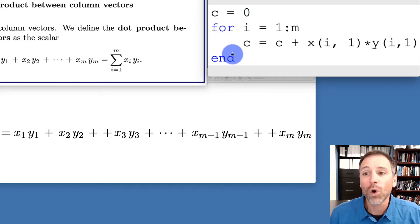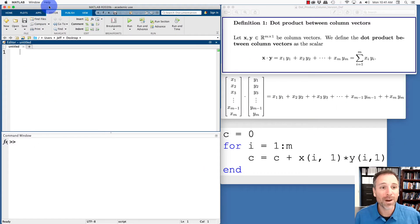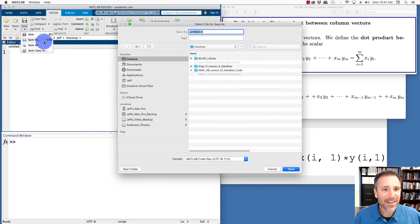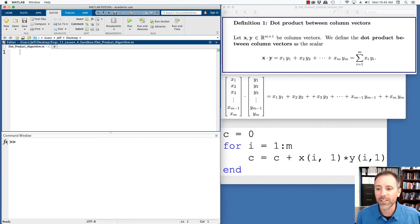Now, that being said, we'll go ahead and implement this in MATLAB to study how this code works and what it produces. Here we are in MATLAB. I'm going to go ahead and create a sandbox script file. So I've created a blank one, I'm going to save this, and in this case we're playing around with loops. So I'm going to call this my Engineering 11 Lesson 4 Sandbox, and in this case I'm going to say dot product algorithm, so we're literally going to just test the dot product.